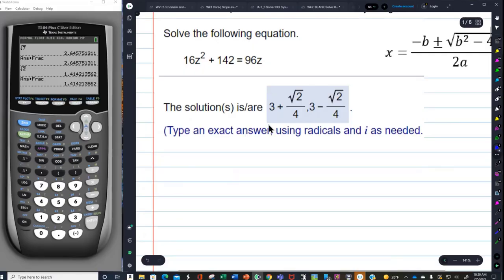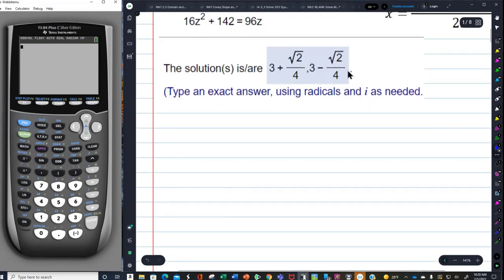Irrational numbers give you answers like this. That's the next problem. Let me clear that. I need to move 96z over, use the zero principle. 16z squared, I'm going to subtract 96z from both sides, minus 96z plus 142 equals zero.